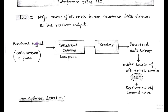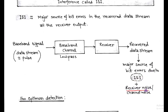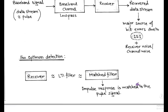The Baseband signal, also called Modulating signal or Message signal, is in the form of a data stream or pulses. These Baseband signals are directly transmitted via the Baseband channel, which is a low-pass channel. At the receiver side, the recovered data stream has major sources of bit error due to Inter-Symbol Interference and receiver noise or channel noise. In order to get optimum detection, the receiver must be an LTI filter.